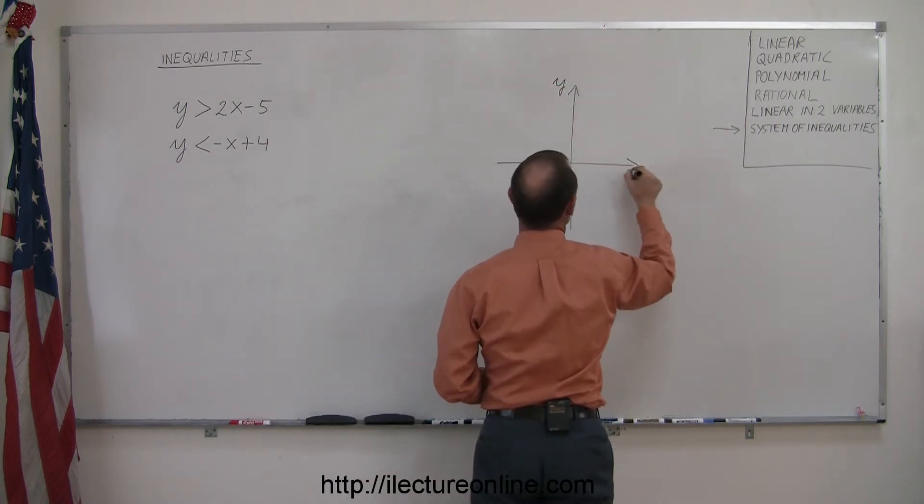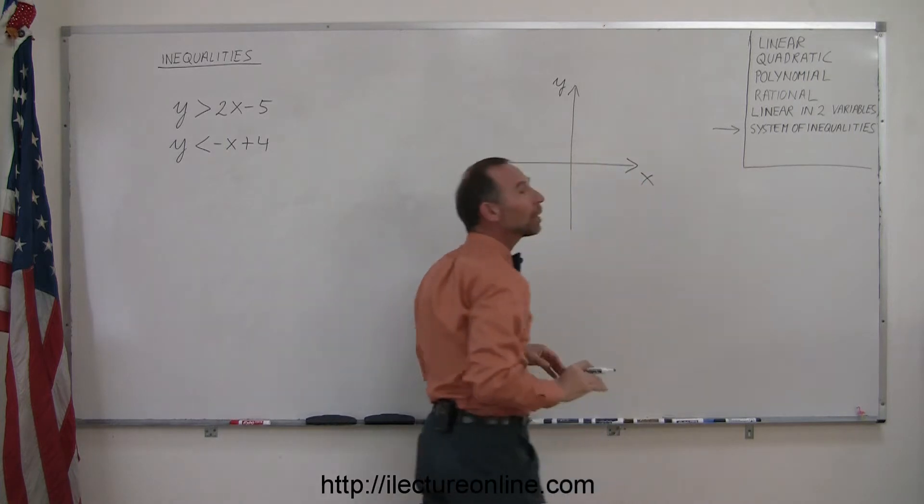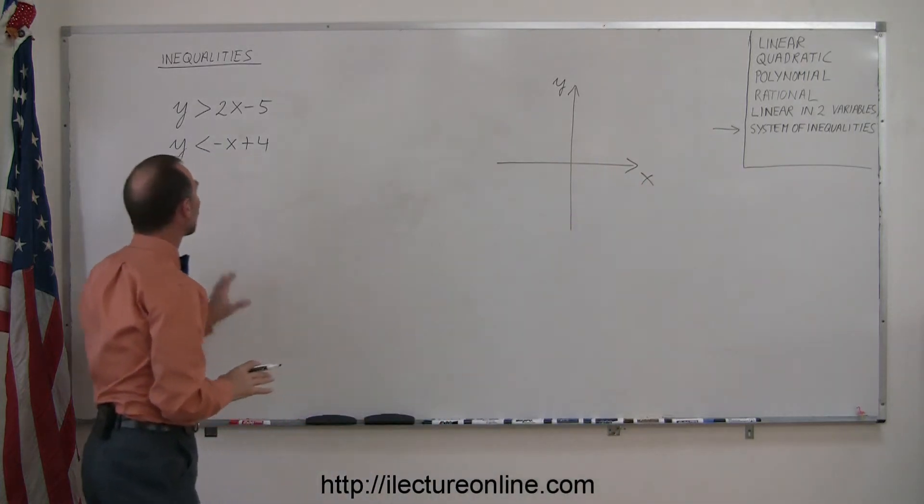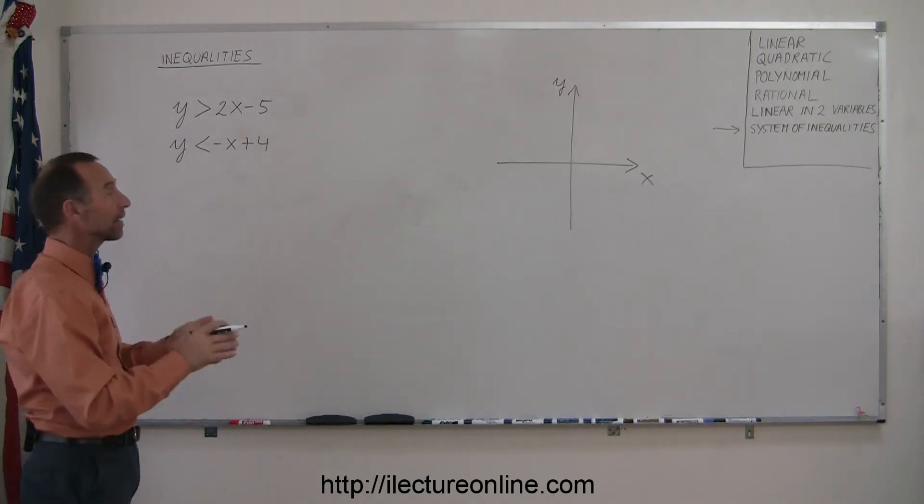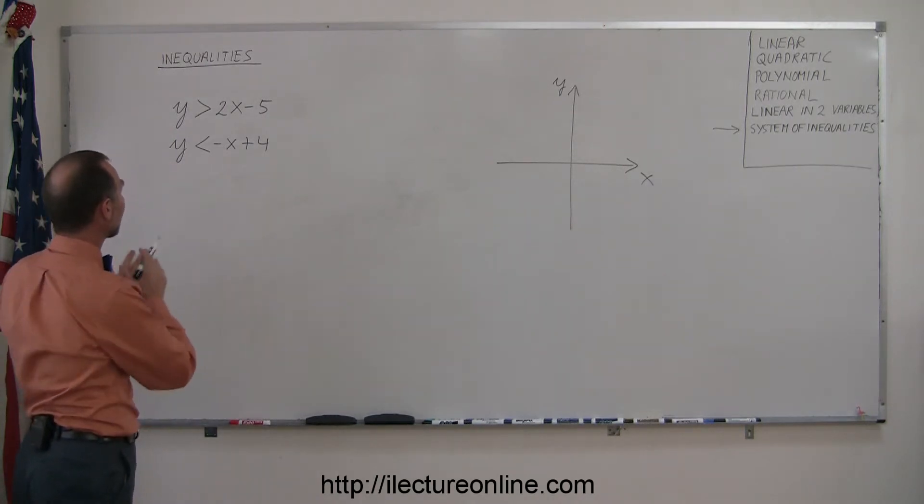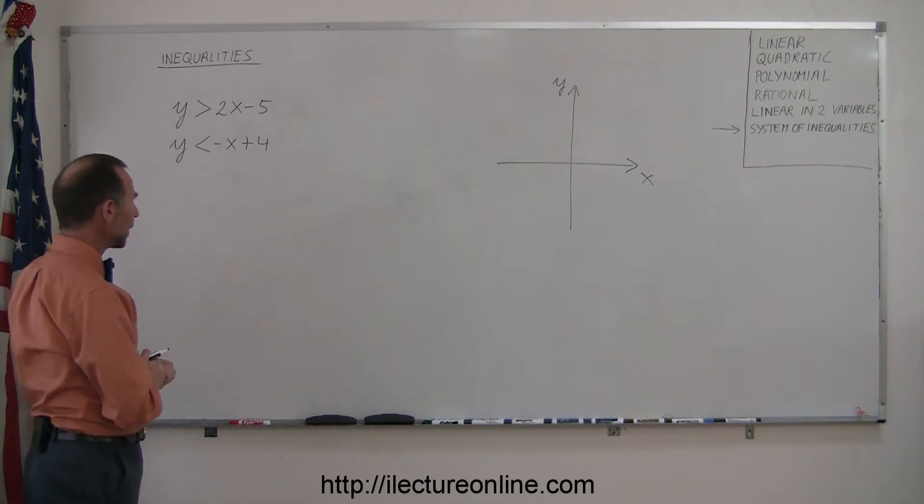There's your y-axis, there's your x-axis, so some region on this plane will include all the points that satisfies these two inequalities. In other words, the set of all x and y coordinates that will satisfy these inequalities. All right, how do you do that?